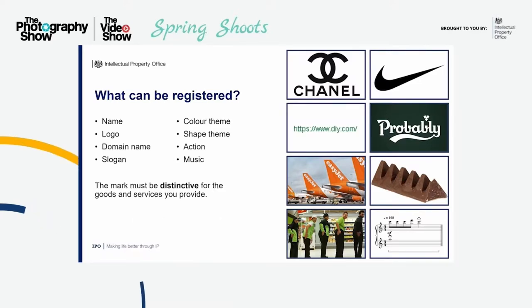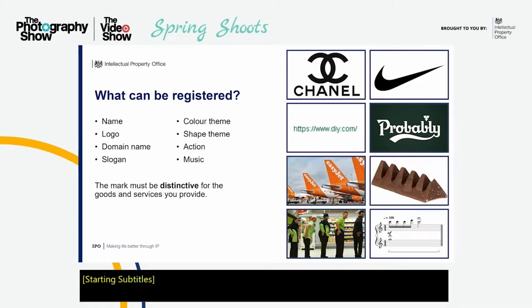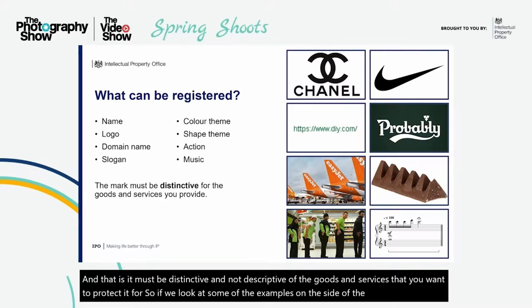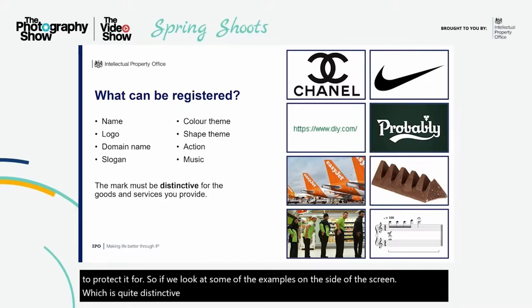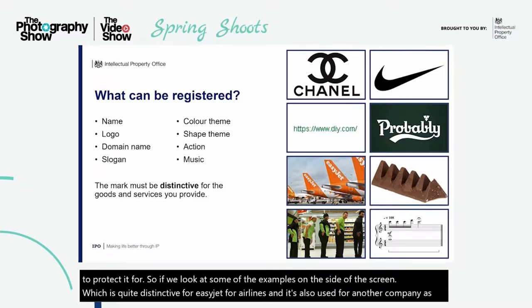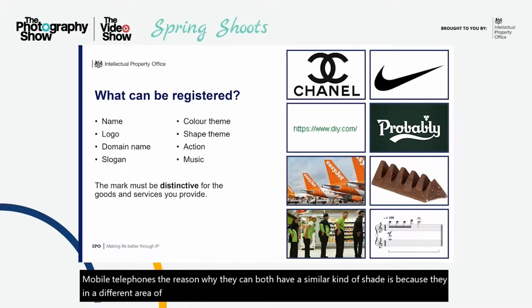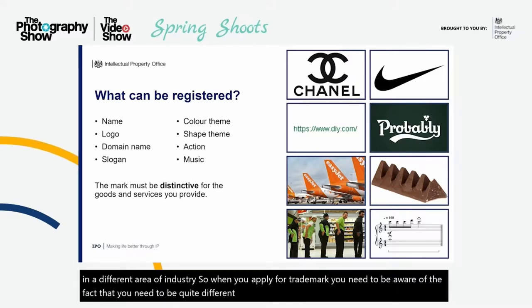There is a criteria you are expected to adhere to when you apply for a trademark, and that is it must be distinctive and not descriptive of the goods and services you want to protect it for. If we look at some examples on the screen, orange is quite distinctive for EasyJet for airlines, and it's also used for another company for mobile telephones. They can both have a similar shade because they're in a different area of industry. When you apply for a trademark, you need to be quite different from your competitors, so try not to use similar or descriptive words within your industry.